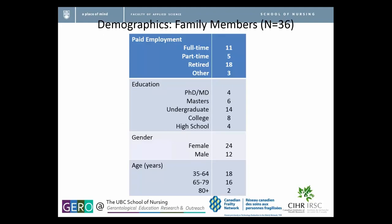In terms of the family members who participated — these are the people who sent back the survey but didn't necessarily participate in the actual workshops — most were retired, and the other largest group were people working full-time, which had implications for participation in the workshops. It was a fairly affluent and well-educated group, with most having post-secondary education. There were more women than men, which is not surprising given what we know about demographics and caregiving. Interestingly, 18 of the people who returned the survey were under the age of 64, and 16 were between 65 and 79.